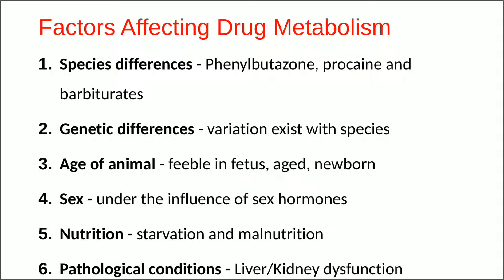What factors affect drug metabolism? The first factor is species differences, or racial differences. Specific examples of drug metabolism affected by species differences include phenylbutazone and barbiturates. The second factor is genetic differences — variation exists in various species of animals and various races of human beings, which also affects drug metabolism.